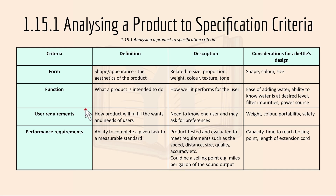For user requirements, it's basically how products will fulfil the wants and needs of users. The description is the need to know an end user and may ask for preference. For example, for a kettle, it could be weight, colour, portability, and safety.